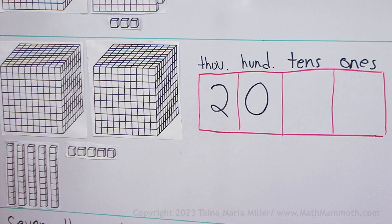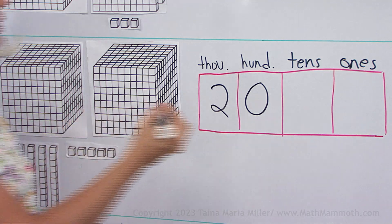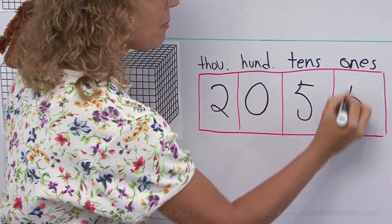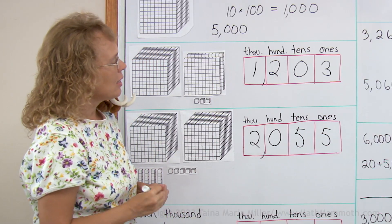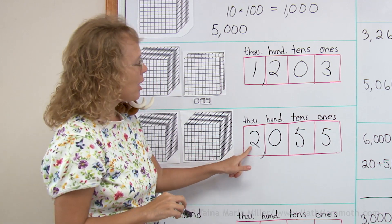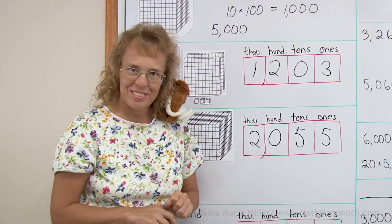And then here are our tens, five tens and five ones. And to read this, it is two thousand fifty-five.